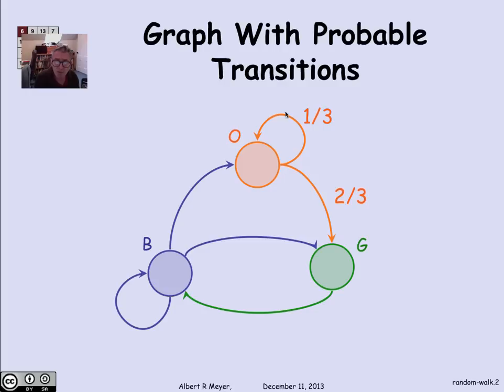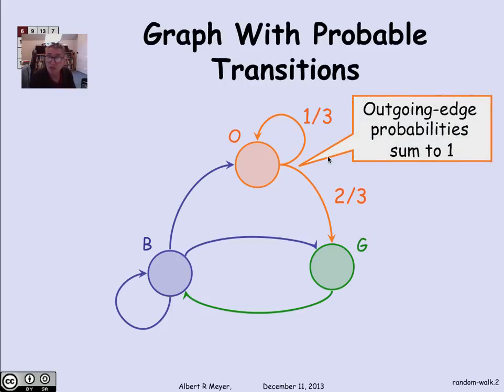what I'm telling you is there's a one-third probability that I'll follow the edge from O to O, and a two-thirds probability that I'll follow the edge from O to green. And the rule is simply that the sum of the probabilities on the outgoing edges has to sum to 1.